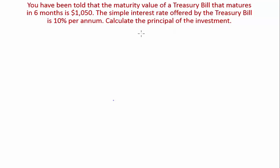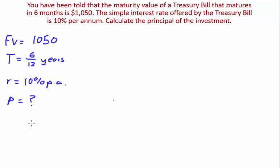So, we're calculating the principle. Future value is 1050. Your time is six on 12 years. And your simple interest rate is 10% per annum. You're trying to find your principle.